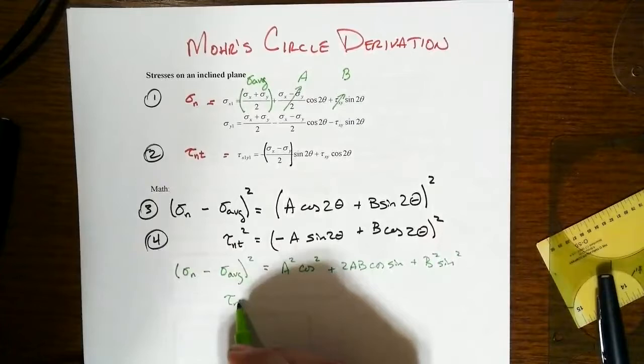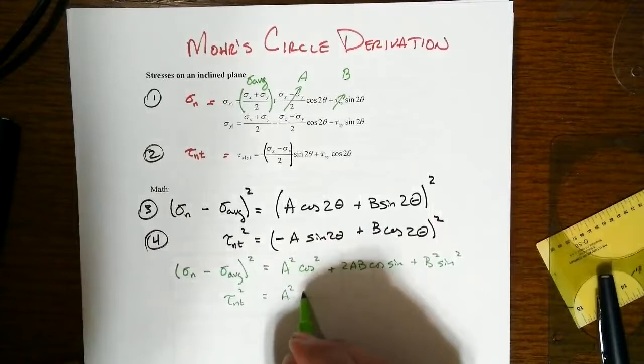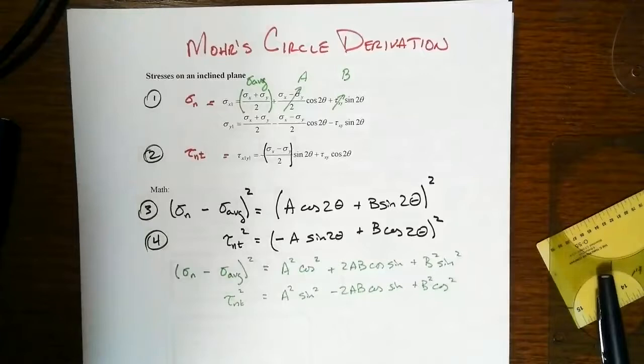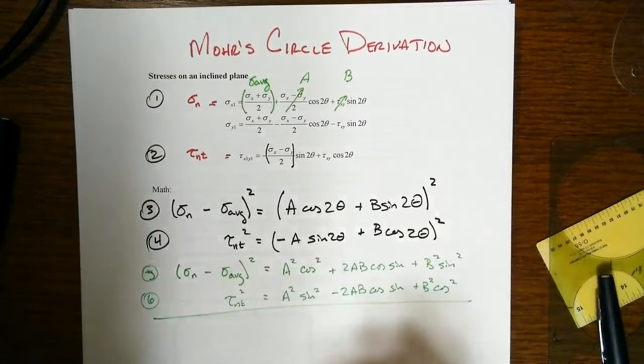And the second equation is tau nt squared. And then we get the first term squared, A squared times sine squared. And then we'll have minus two AB cosine times sine. And then finally, plus B squared cosine squared term. So call that equations five and six, and we'll just add those two together.